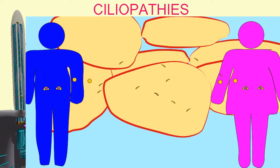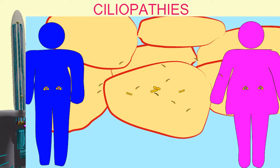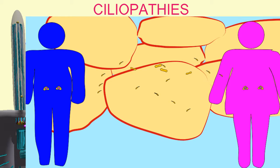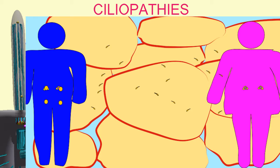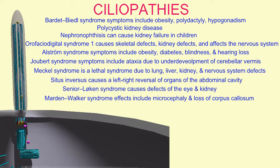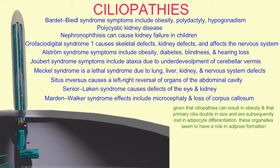Not only do they disappear in differentiated adipocytes, they also briefly double in size during the process of differentiation. It therefore seems that the differentiation of fat cells, and perhaps some aspects of weight gain, are governed by signaling pathways in primary cilia.